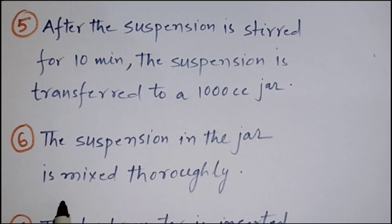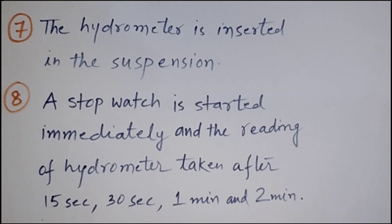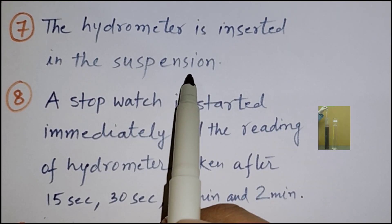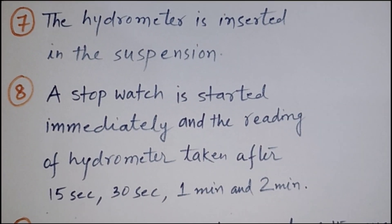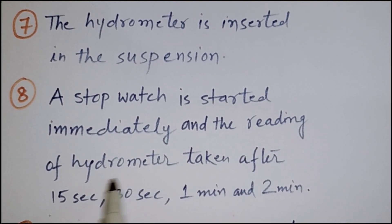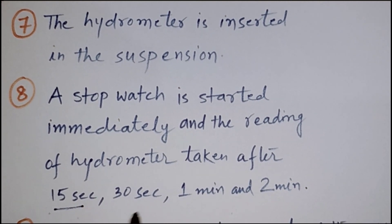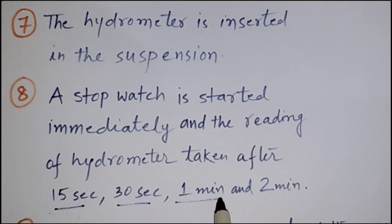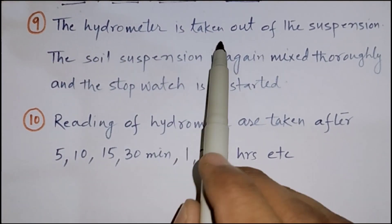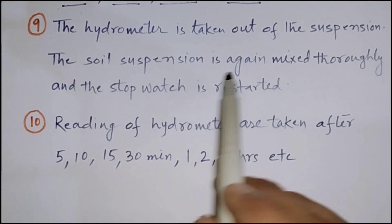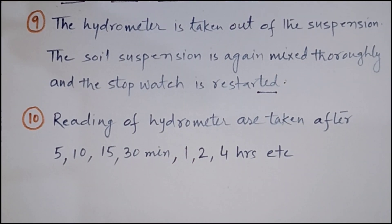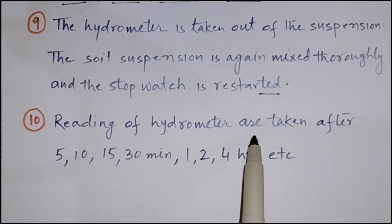After the suspension is stirred for 10 minutes, the suspension is transferred to a 1000 cc jar. Then the suspension in the jar is mixed thoroughly. After that, the hydrometer is inserted in the suspension. A stopwatch is started immediately and the reading of the hydrometer is taken after 15 seconds, 30 seconds, 1 minute, and 2 minutes. Then the hydrometer is taken out of the suspension. The soil suspension is again mixed thoroughly and the stopwatch is restarted.